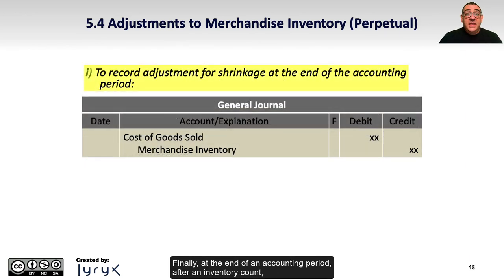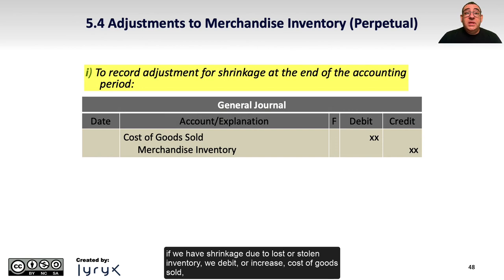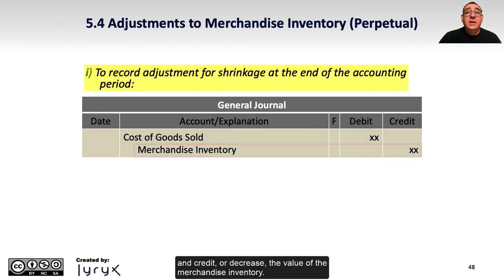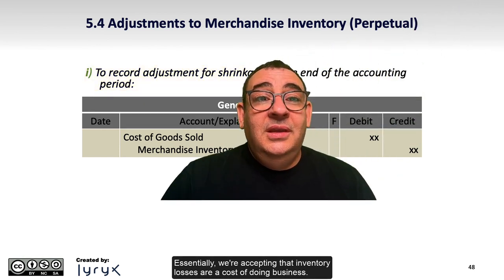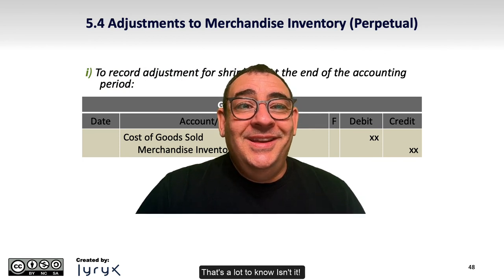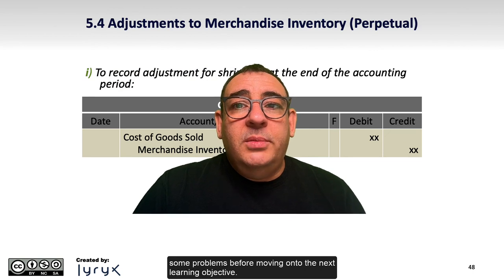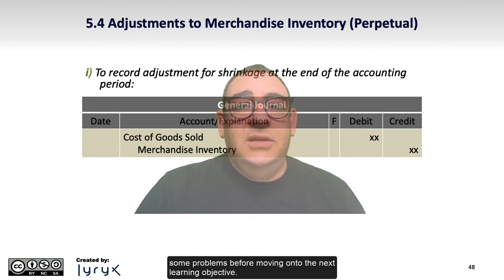Finally, at the end of an accounting period after an inventory count, if we have shrinkage due to lost or stolen inventory, we debit or increase cost of goods sold and credit or decrease the value of the merchandise inventory. Essentially, we are accepting that inventory losses are a cost of doing business. That's a lot to know, so make sure that you review enough examples and work through some problems before moving on to the next learning objective.